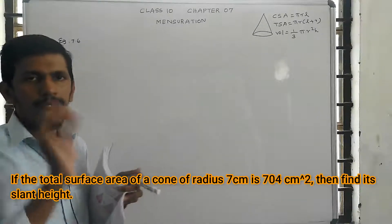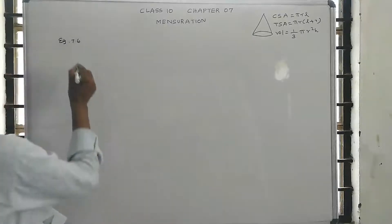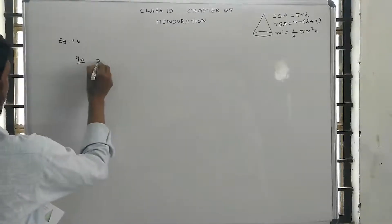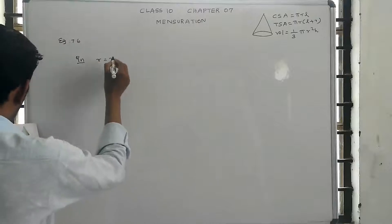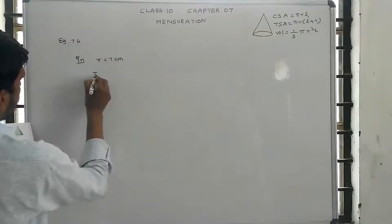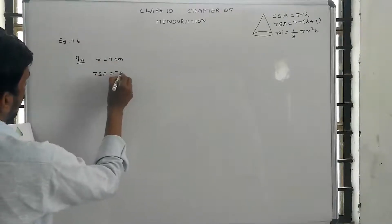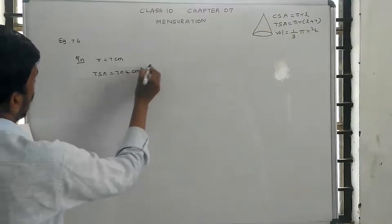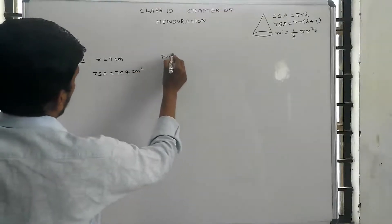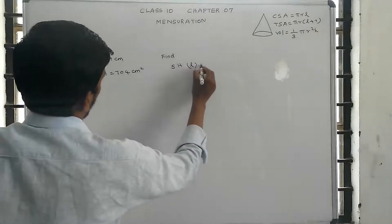So given: radius r equal to 7 centimeters, and total surface area is 704 centimeter square. Find: slant height, which is the answer.